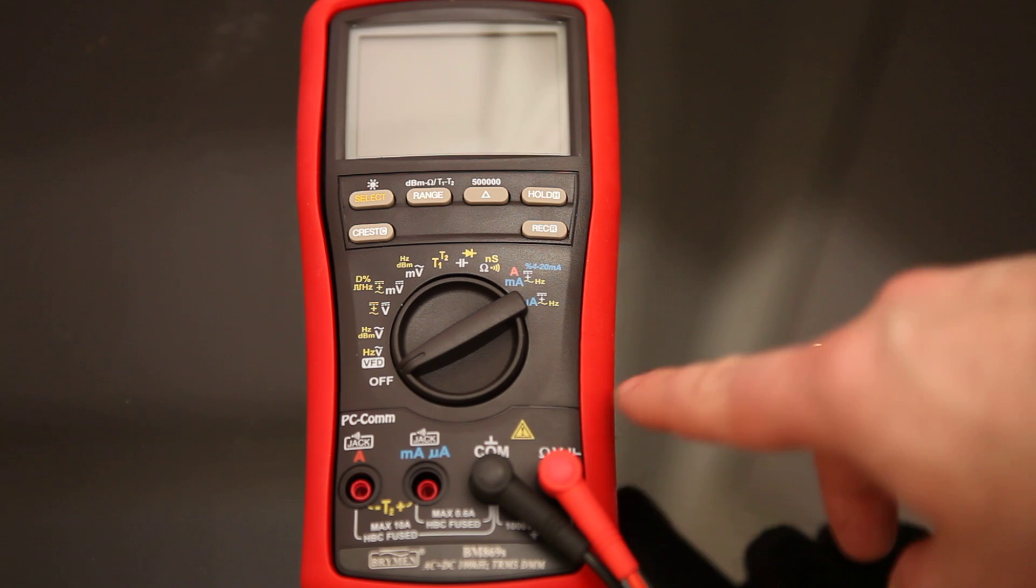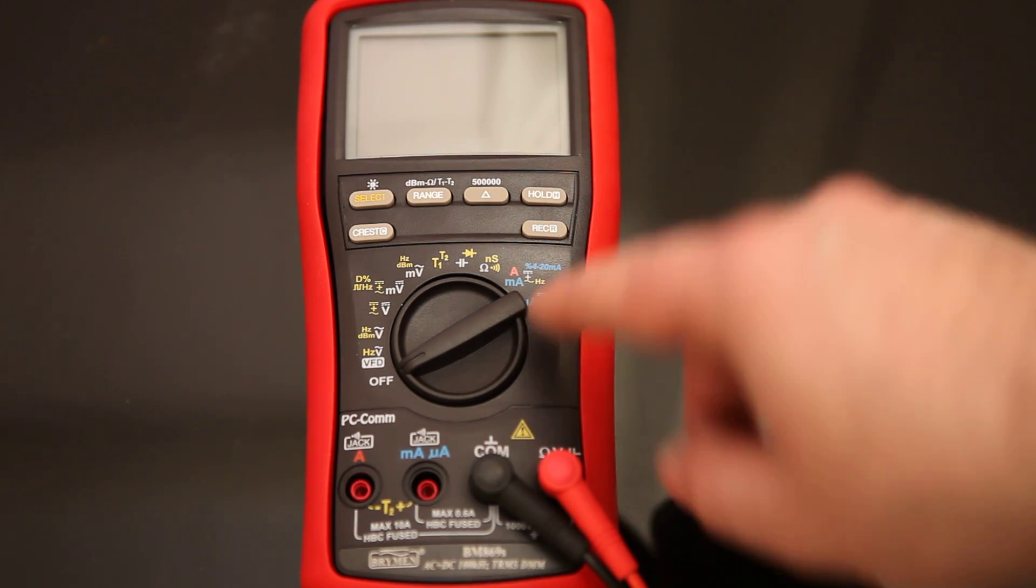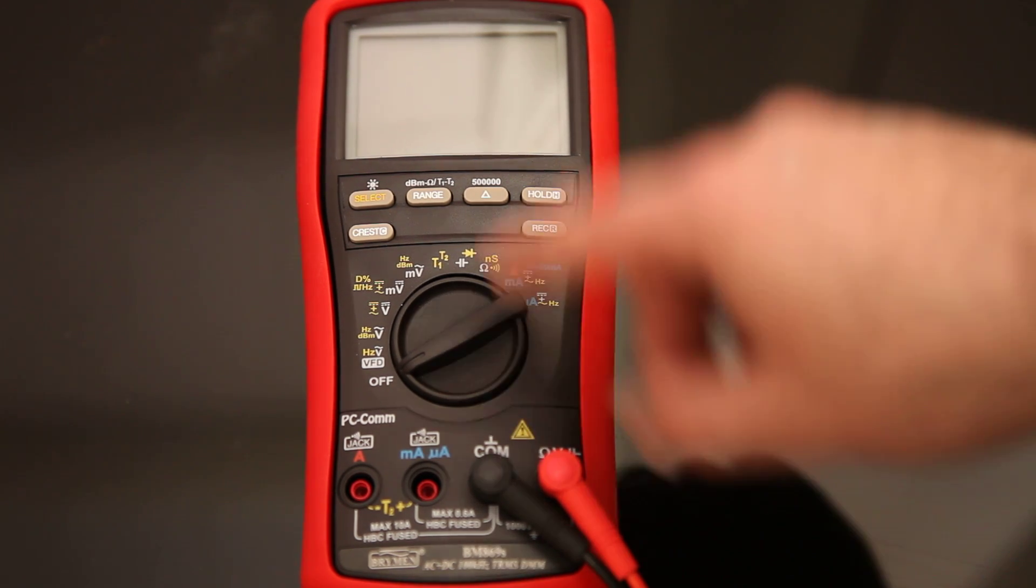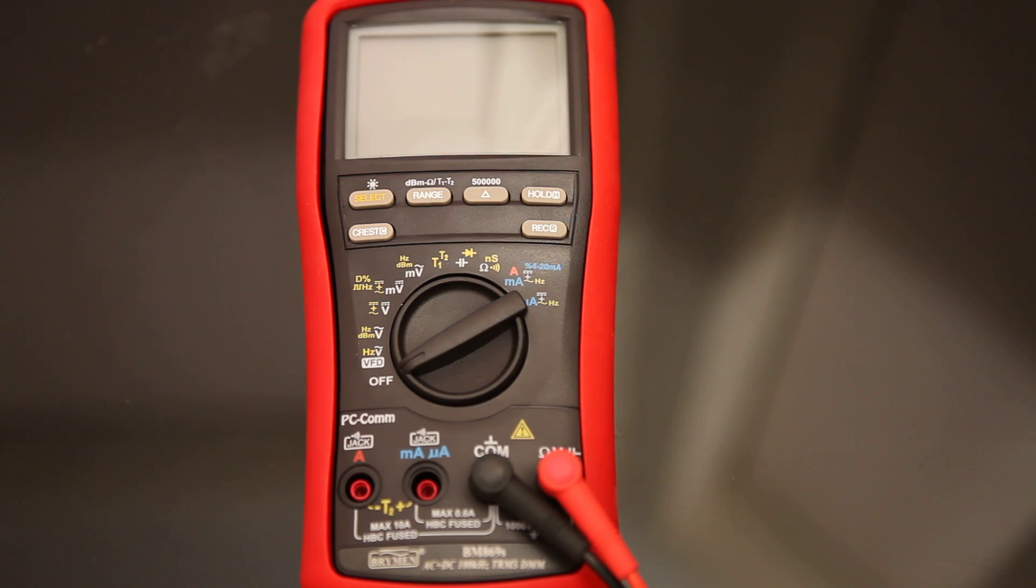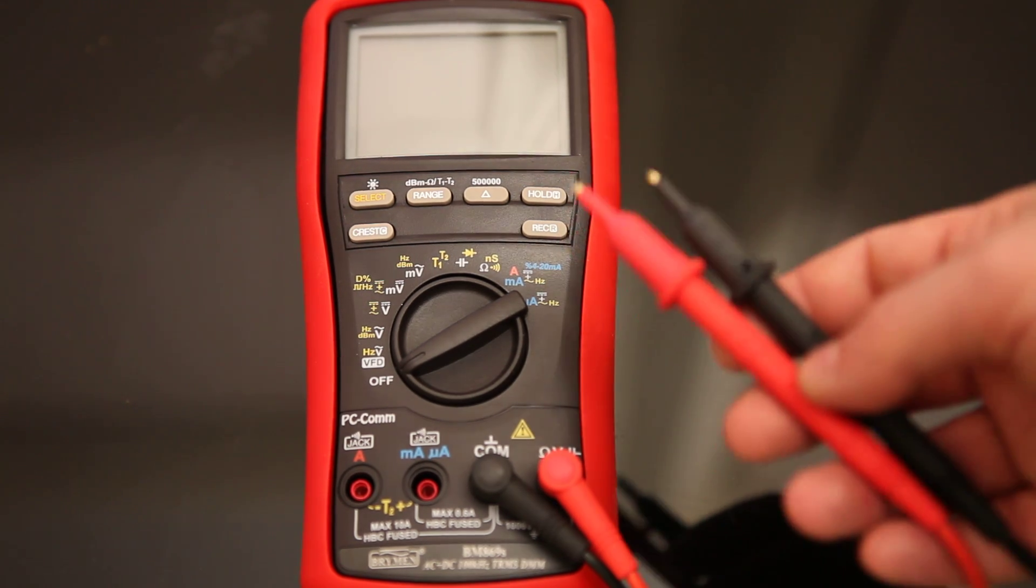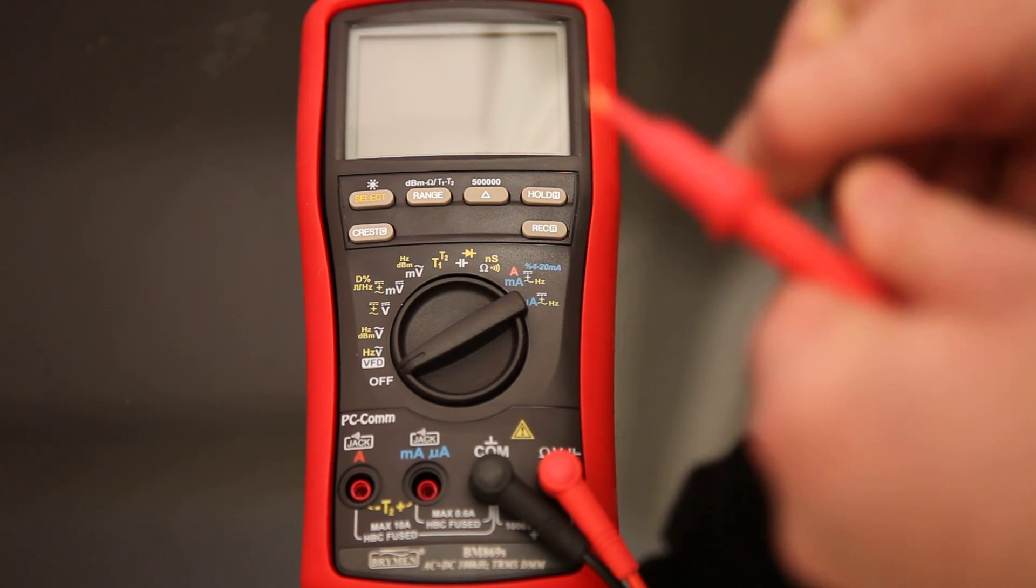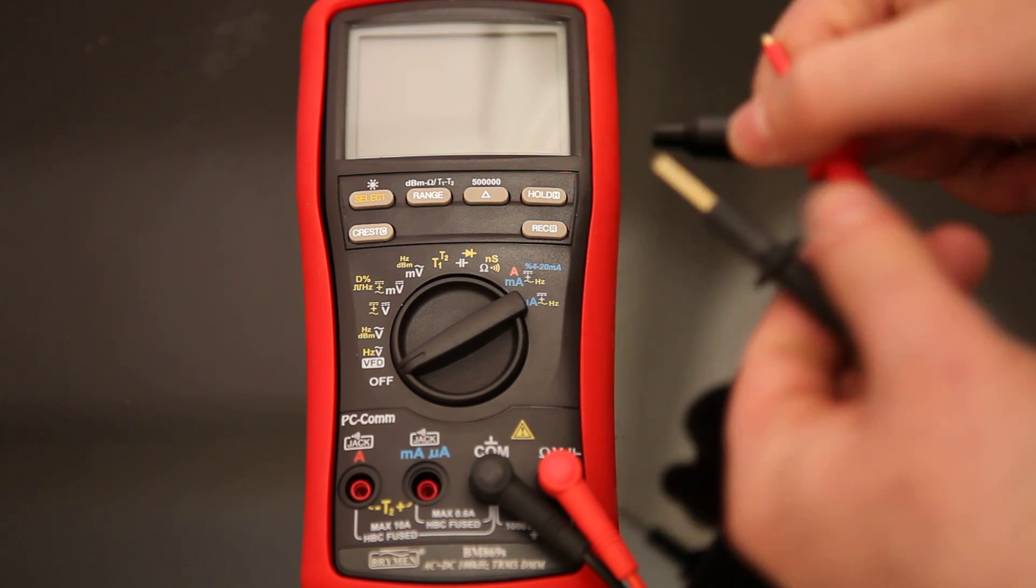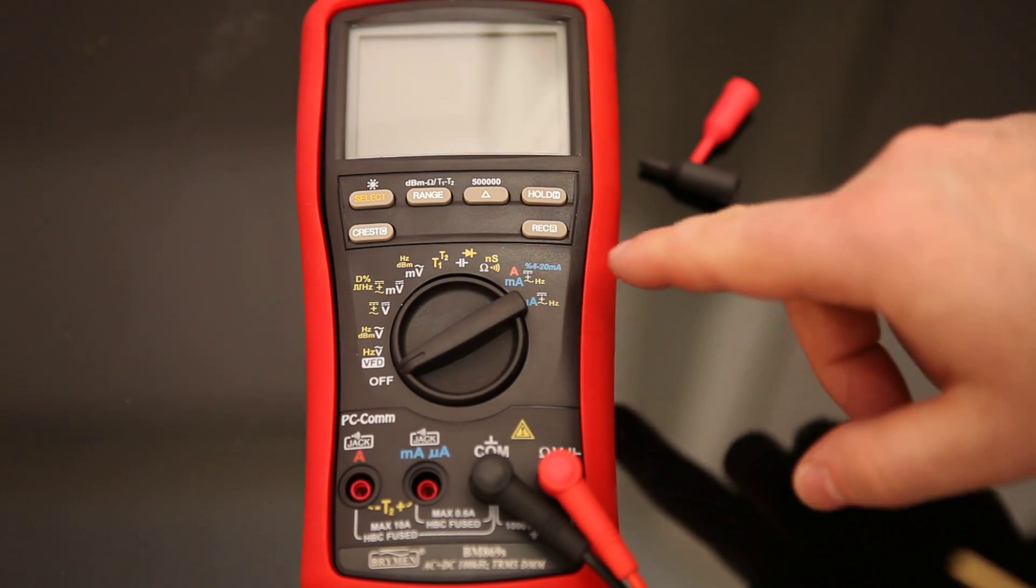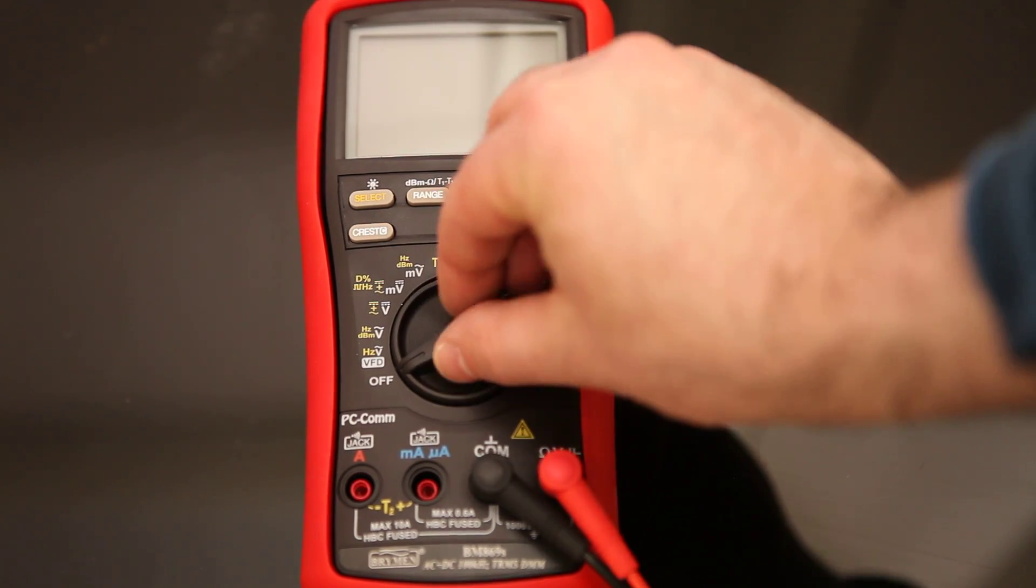But it may as well be the last multimeter I ever buy, because it's got everything I need on it. So it's category 4 rated, 1,000 volt probes with these detachable shields, which are quite nice, and it's got 50,000 counts by default.